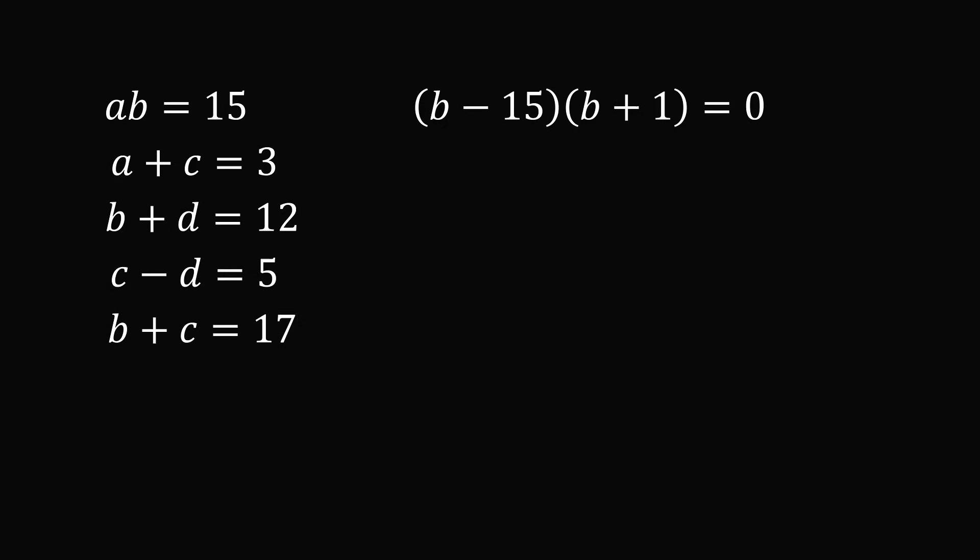So, we get two possibilities. From b minus 15, we get that b will be equal to 15. And from the other factor, we would get that b is equal to minus 1. So, this puzzle will have two different ways to solve it.